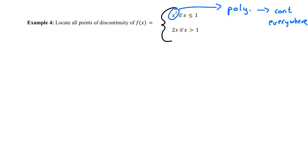I want to look at all of the other pieces too. The only other piece I have is 2x. What type of function is 2x? It's also a polynomial, which means it is continuous everywhere. So this function is continuous almost everywhere that x squared is defined and almost everywhere that 2x is defined.